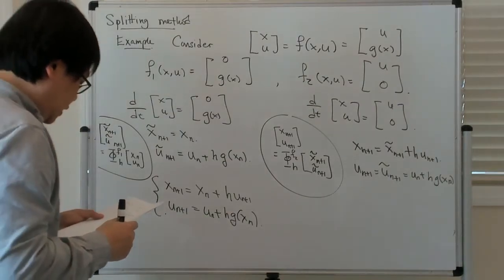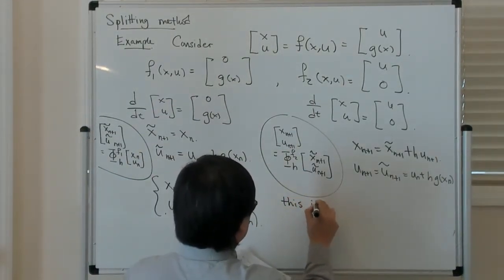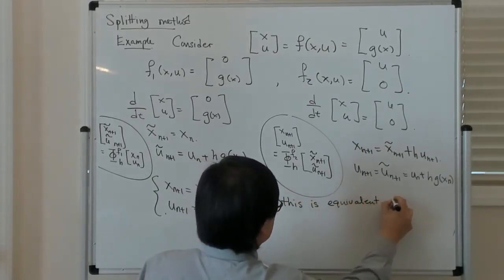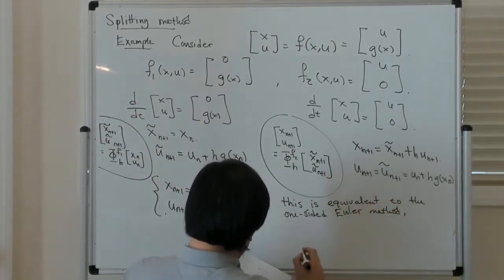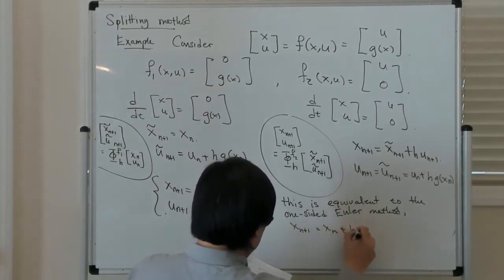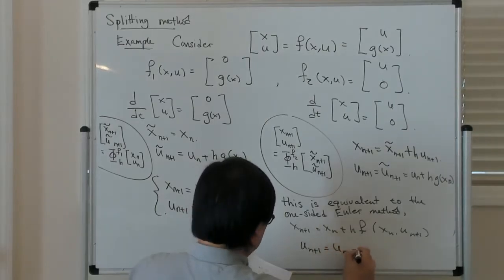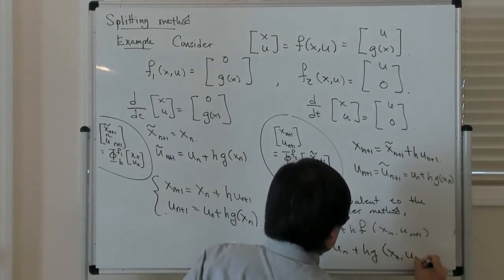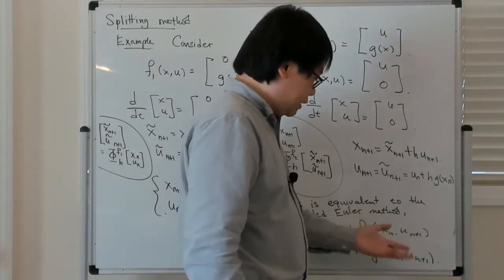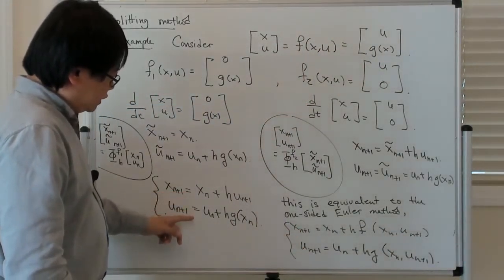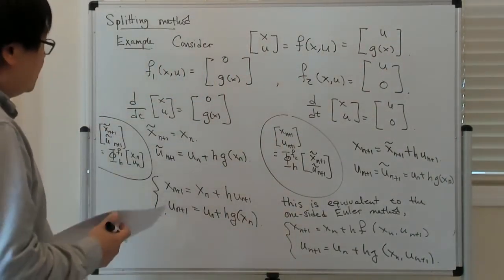That's the method you get, and you can show that this is equivalent to what is called the one-sided Euler method, which is given as follows: x n plus 1 is equal to x n plus h times f evaluated at x n u n plus 1, and u n plus 1 is equal to u n plus h g x n u n plus 1. This is like the Euler method, except that the vector field is evaluated at the initial position in the final velocity or momentum. It's easy to convince yourself that this is equivalent when applied to this set of differential equations. That's one example.